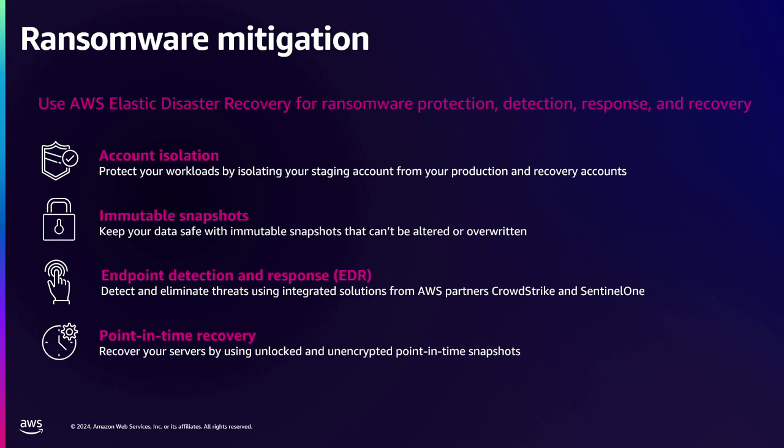Number four: because DRS is block-level replication, you always have close-to-zero RPO replication with the hot data, as long as your network permits. What happens if you have a ransomware attack? You do not want to recover the last point because it may already be compromised. DRS takes snapshots every 10 minutes in the back end, so you can recover from whichever 10-minute point is a safe copy, minimizing your RPO.